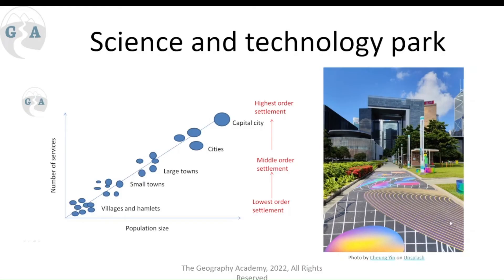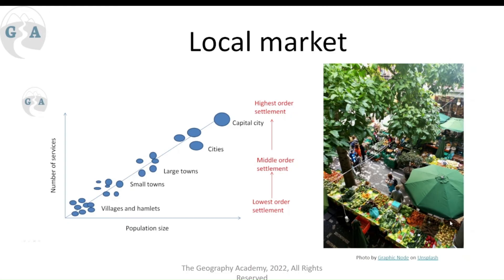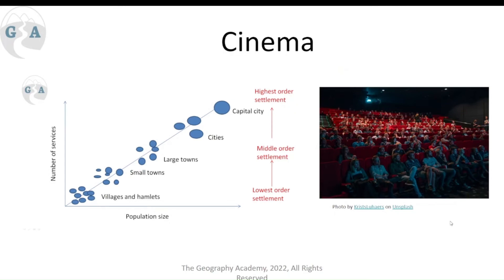In terms of the frequency and distribution of services: science and tech parks are a higher-order service found in places like the capital city, not in small towns. Local markets are found in hamlets and villages where people sell their own produce, though they may occasionally appear in cities too. Cinemas, for example, come in as middle-order settlement services and could be seen in larger towns and upwards.